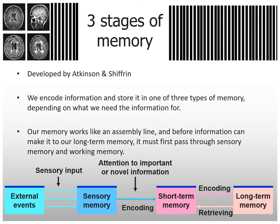Our memory works like an assembly line. Before information can make it to our long-term memory, it must first pass through sensory memory and working memory.